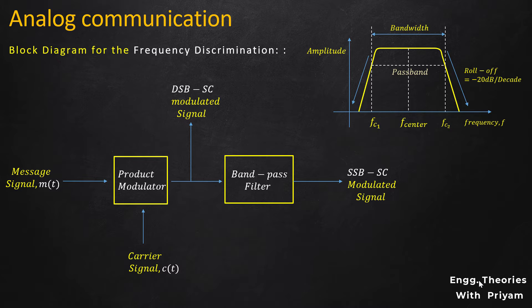The bandpass filter allows generation of either an upper sideband or lower sideband SSBSC modulated signal depending upon the bandwidth of the bandpass filter. Based on the passband, the bandpass filter can select either the upper sideband or lower sideband. This selection process becomes difficult when the edges of the bandpass filter are not sharp, or when the bandpass filter has poor selectivity. This problem is discussed at length in the lecture on drawbacks of SSBSC generation using the bandpass filter.